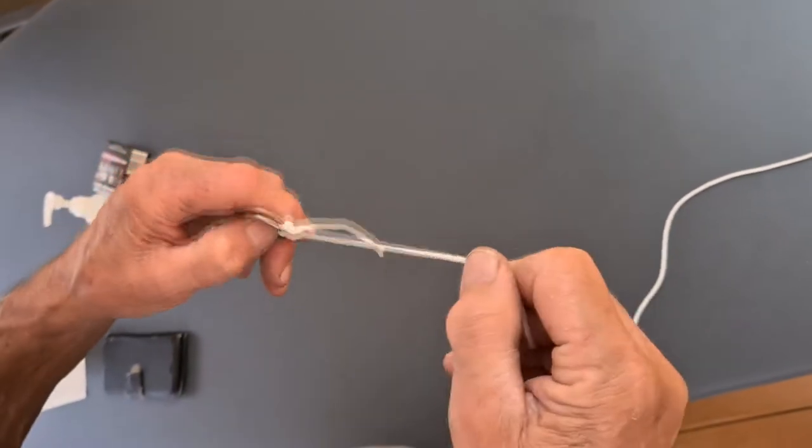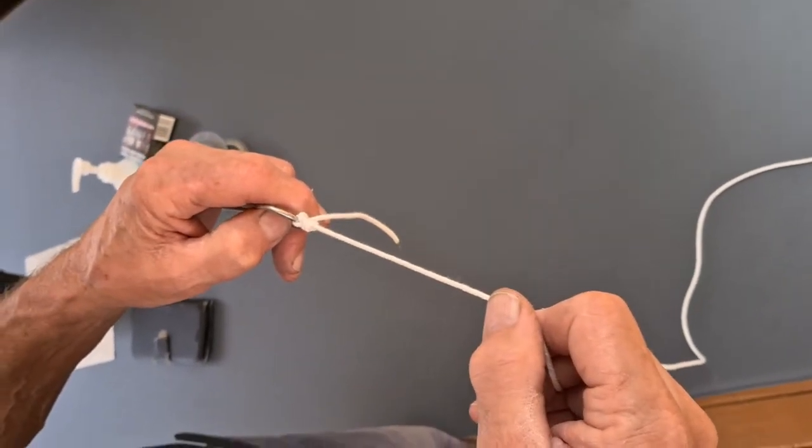Okay, and you can tie that on monofilament line, braided line, all sorts of line? Any line, yeah. You can use that to join the line as well, because you've got a nice and tidy knot when you join the line.